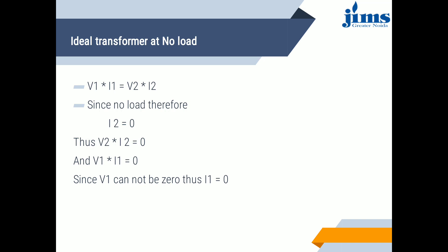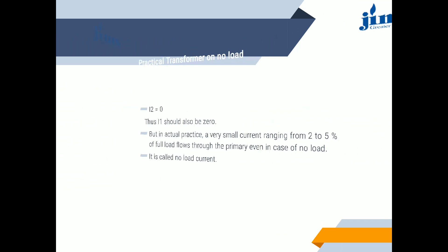In the ideal transformer, V1·I1 = V2·I2, meaning the rating of the primary winding equals the rating of the secondary winding. Since there is no load, secondary current I2 = 0, which means V2·I2 = 0, and therefore V1·I1 = 0. Since V1 cannot be zero, thus I1 = 0.